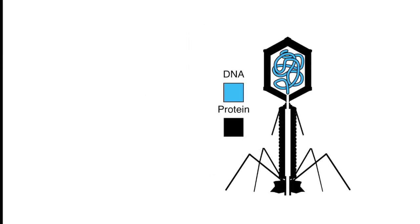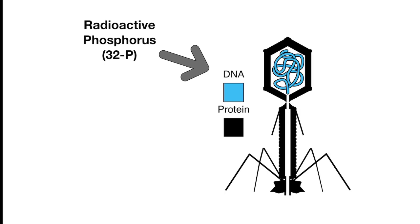To determine this, they needed to be able to identify the DNA and the protein from the virus. In order to do that, they tagged the DNA in the virus with radioactive phosphorus or ³²P and they tagged the protein coat of the virus with radioactive sulfur or ³⁵S.